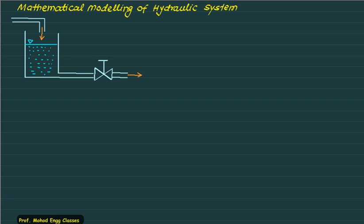Mathematical modeling of a hydraulic system. Let's consider here one tank and the tank is filled up to this level. There is an incoming flow coming from this side. At outlet we have a valve and through this we can control the discharge and we have the outgoing flow equal to Q2.